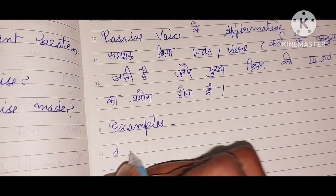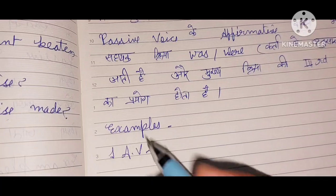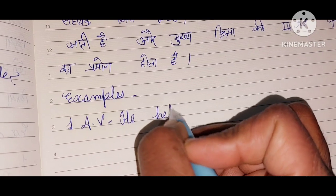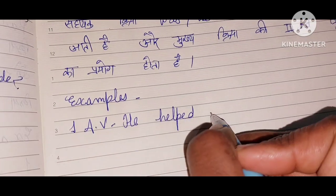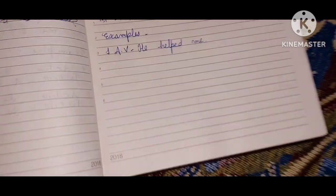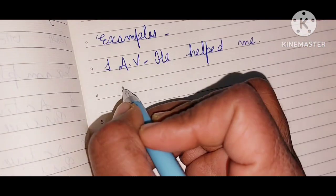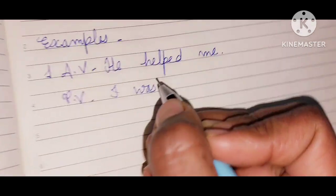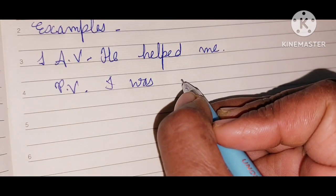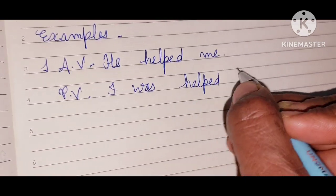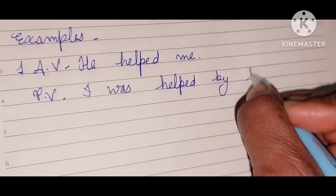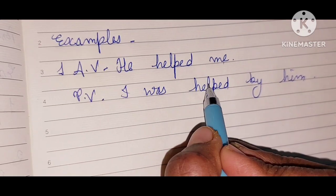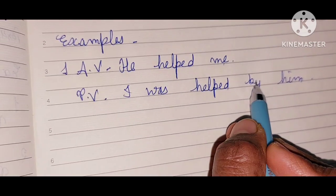First example: active voice — 'He helped me.' Passive voice — 'I was helped by him.'